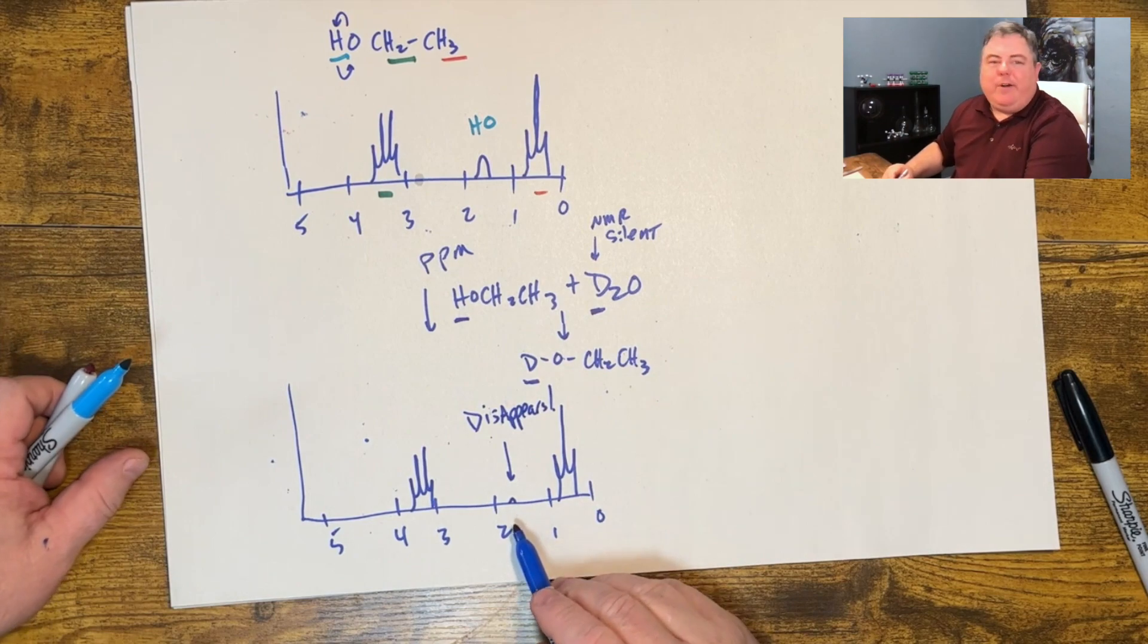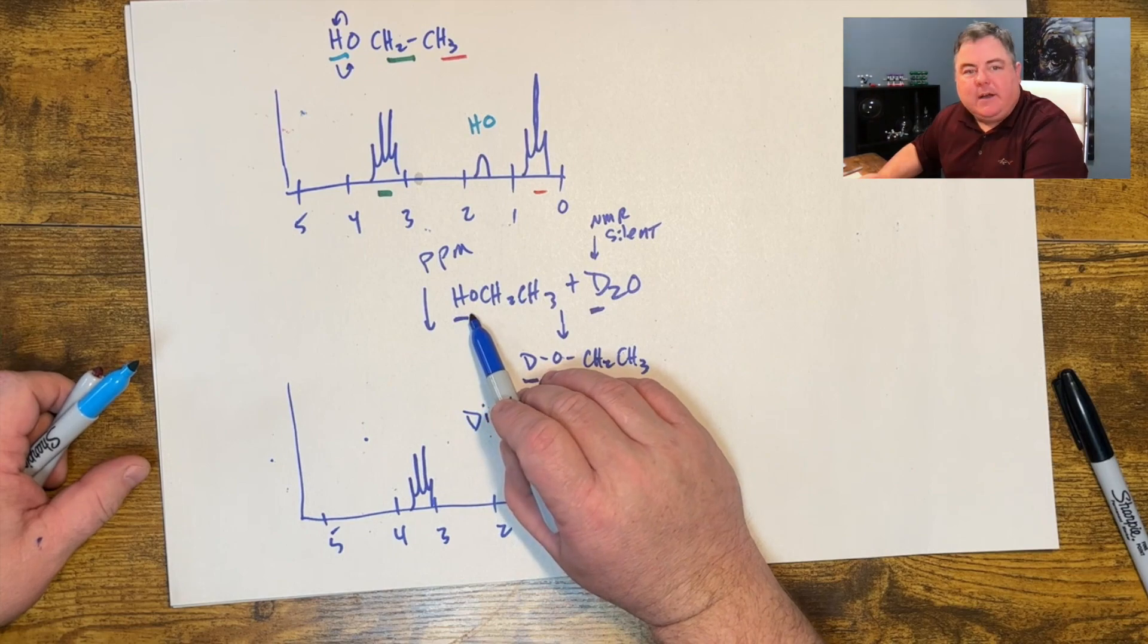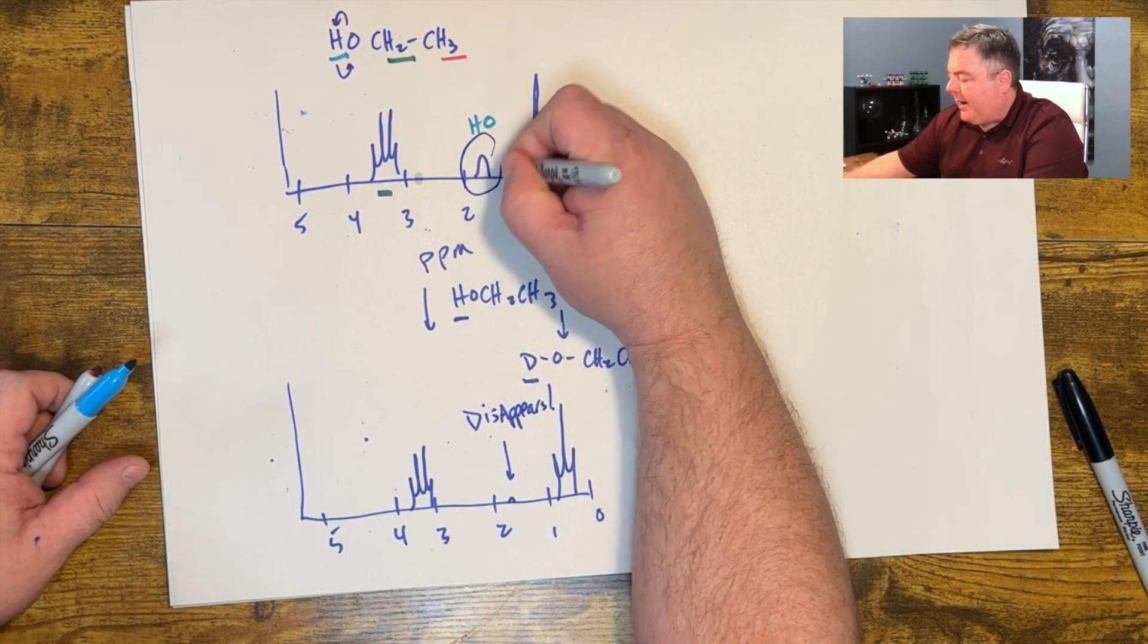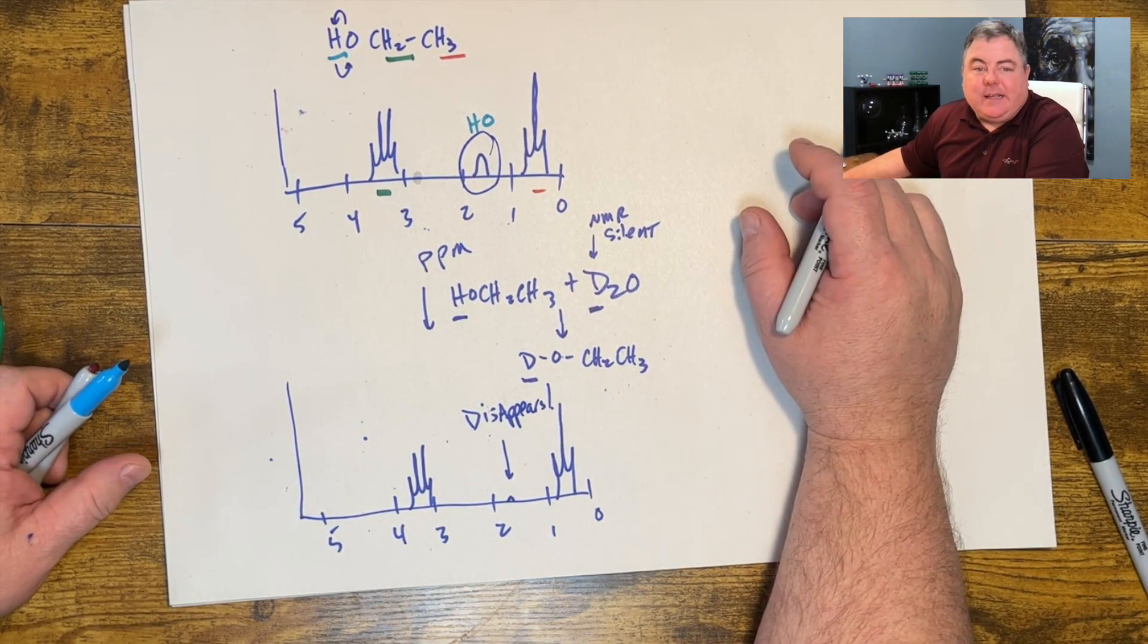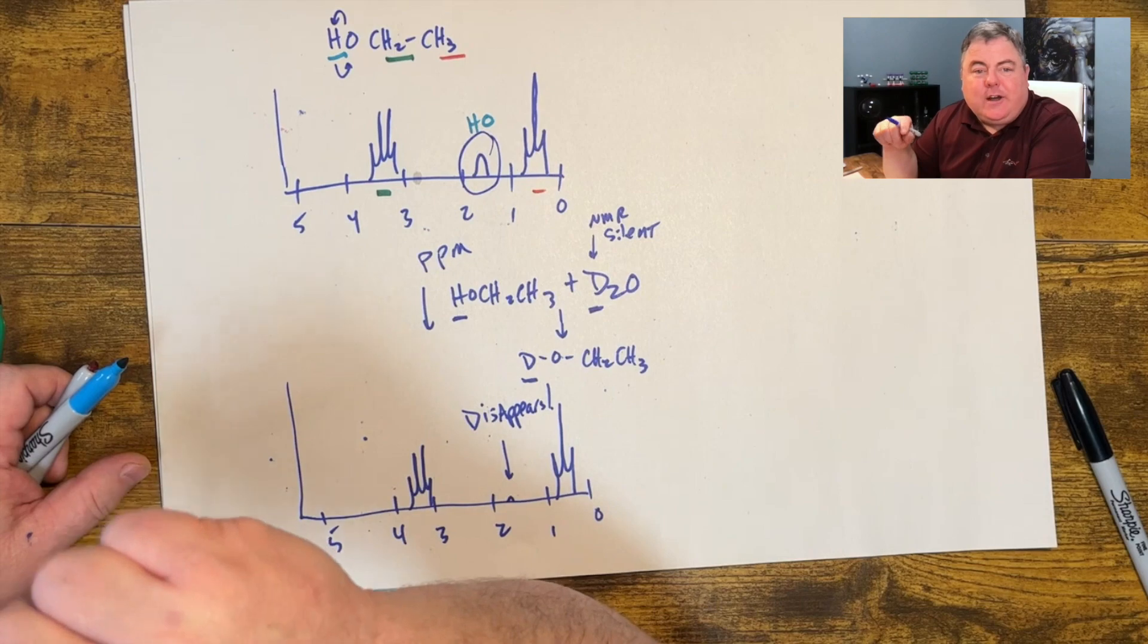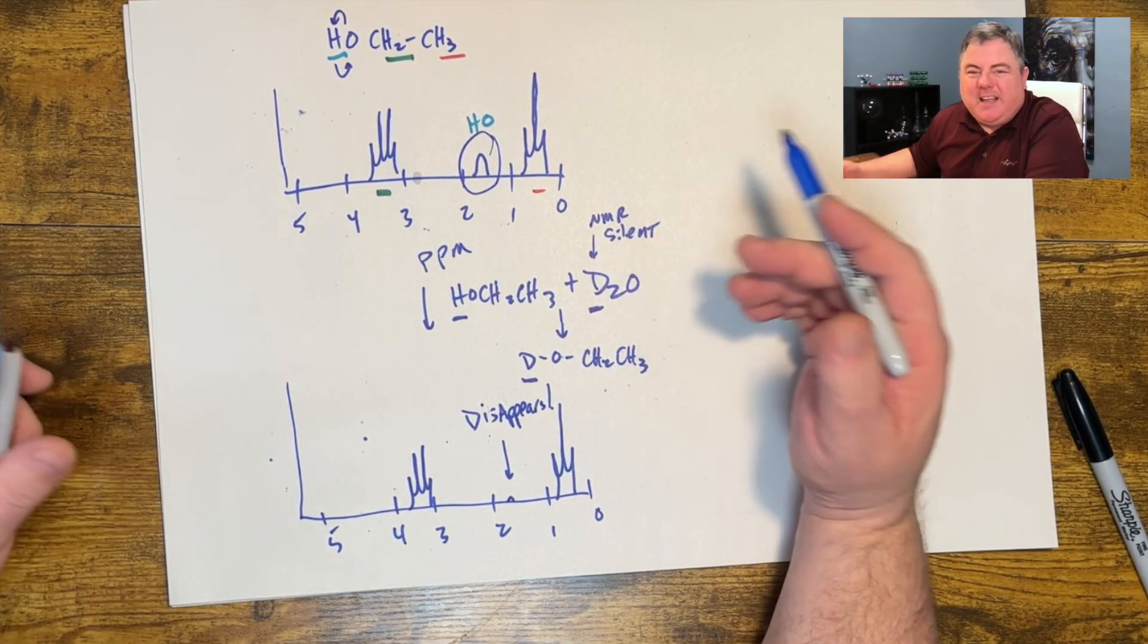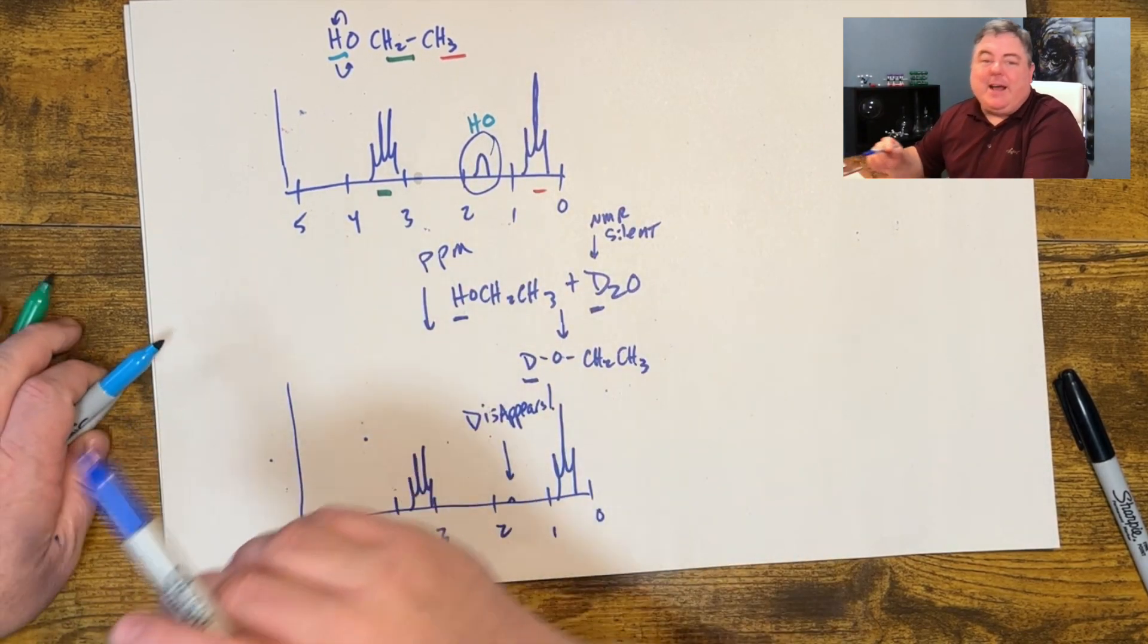But the one that was on the alcohol, now it's a deuterium, so this peak disappears or it gets very very tiny if there's just a little bit of hydrogen left on there because this was the hydrogen on the alcohol. So if you see a peak disappear, you know that was a hydrogen on an oxygen. Amines do the same things. If you have a hydrogen on a nitrogen it can also be exchanged with deuterium. Just a little trick to help us figure out where the alcohol is.